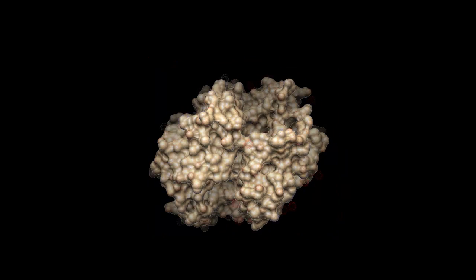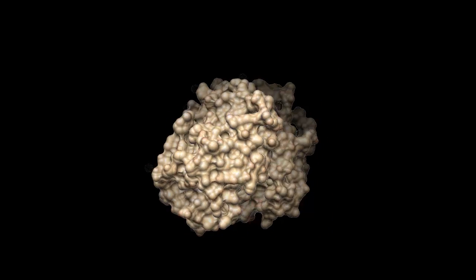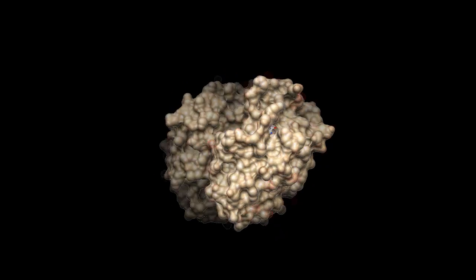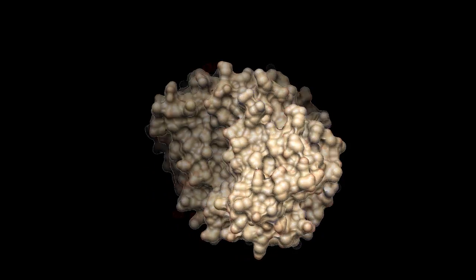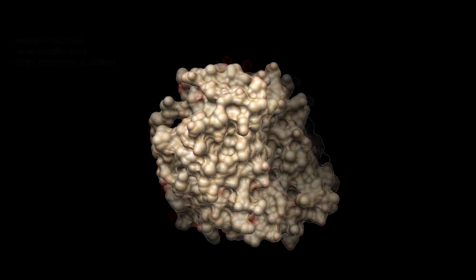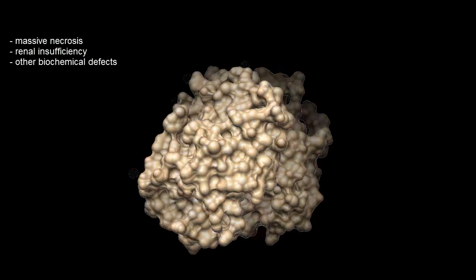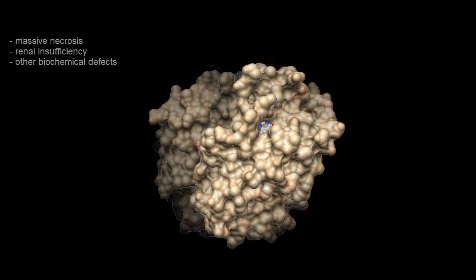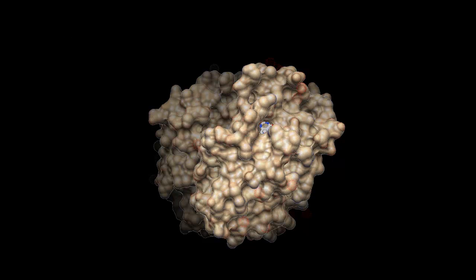One biochemical cause of gout is decreased levels of functional HGPRT, the enzyme shown here. Gout can also result from episodes of massive necrosis, renal insufficiency, and other biochemical defects. Gouty arthritis results when uric acid crystallizes in the joint synovial fluid, where it may be phagocytized by macrophages, leading to cell lysis and inflammation.